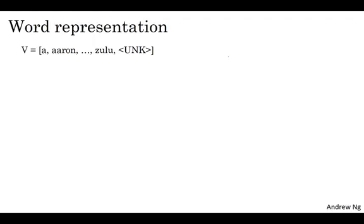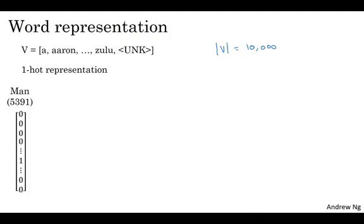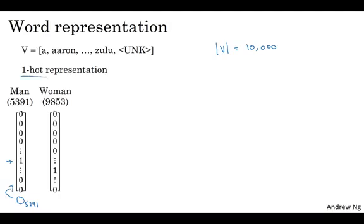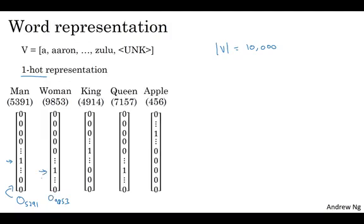So far, we've been representing words using a vocabulary of words. Our vocabulary from the previous week might be, say, 10,000 words. And we've been representing words using a one-hot vector. So for example, if man is word number 5391 in this dictionary, then you represent it with a vector with a one in position 5391. And I'm also going to use O subscript 5391 to represent this vector, where O here stands for one-hot. And then if woman is word number 9853, then you represent it with O subscript 9853, which just has a one in position 9853 and zeros elsewhere. And then other words, king, queen, apple, orange would be similarly represented with one-hot vectors.